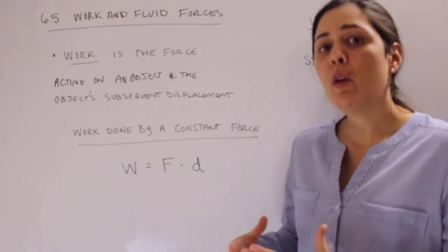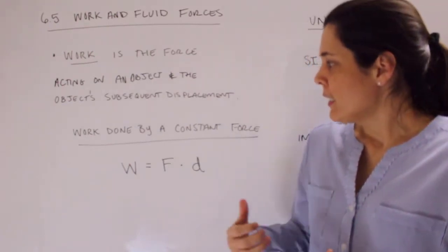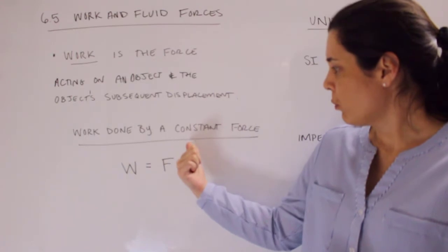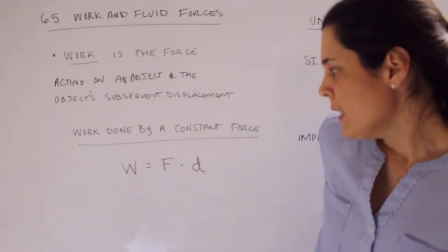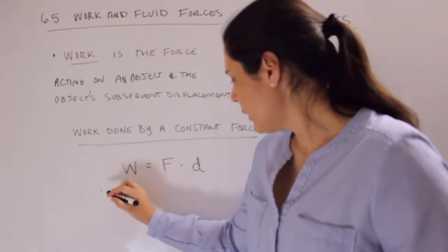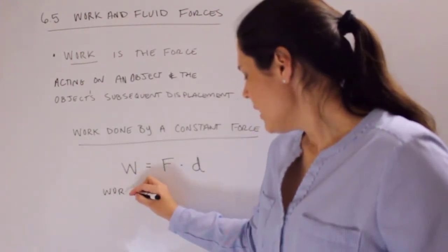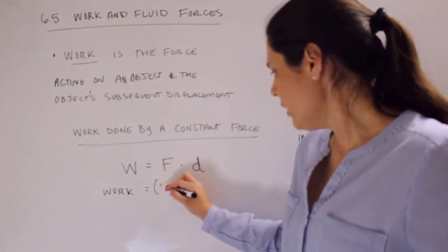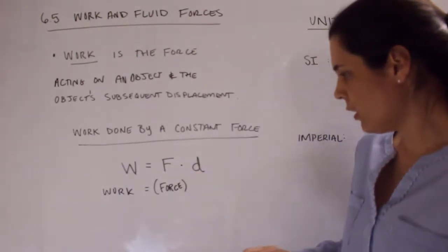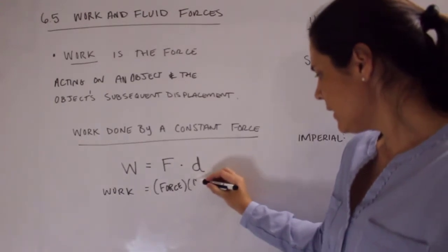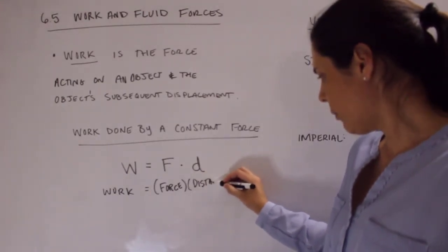And so how to calculate that number, it's actually this equation here if the constant force is what's being applied to moving the object. Work, which we use W to represent, equals F times D, where F represents the force exerted onto the object and then D is the distance that you're moving that object.